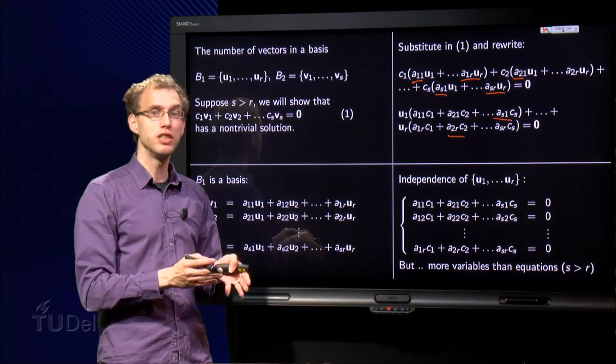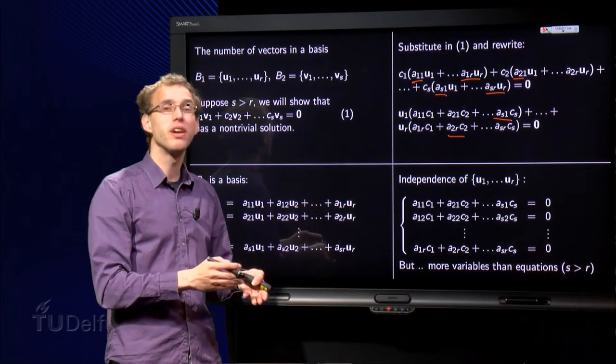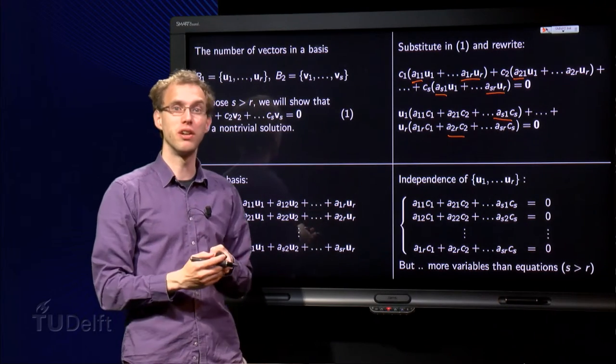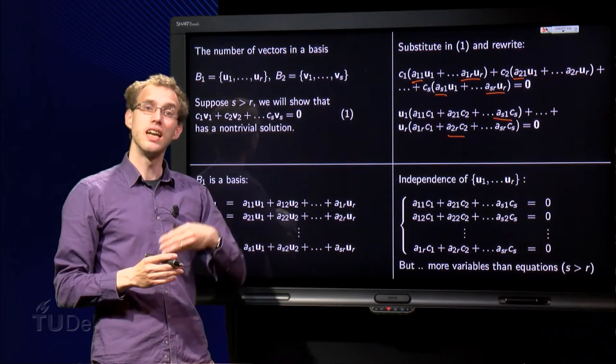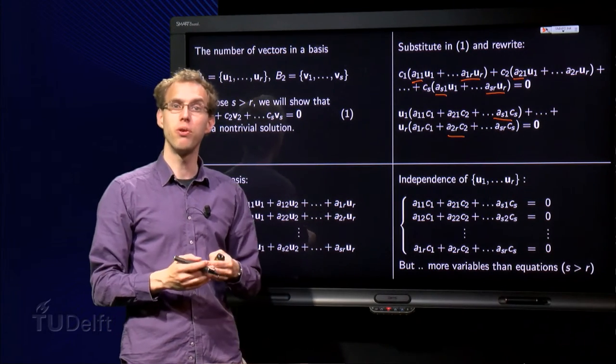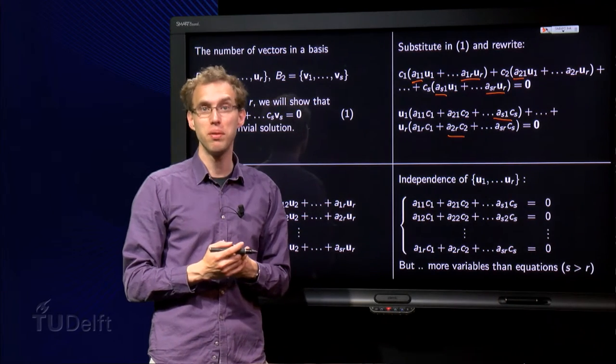Only r equations, but r was smaller than s, so I have more variables than unknowns, so I have a very broad augmented matrix. That means that when we do some row reduction, we will always have free variables.